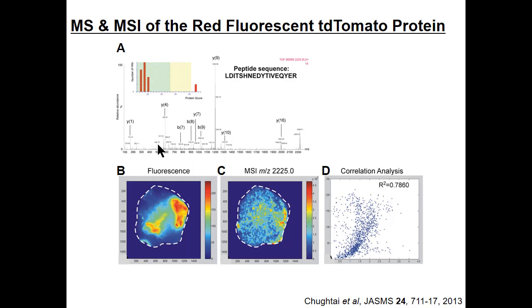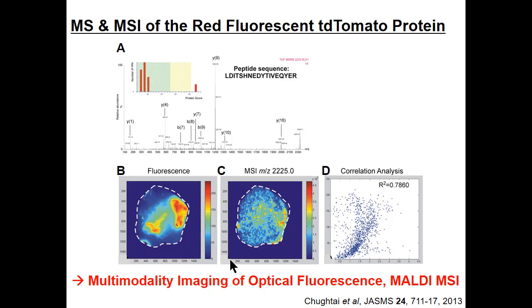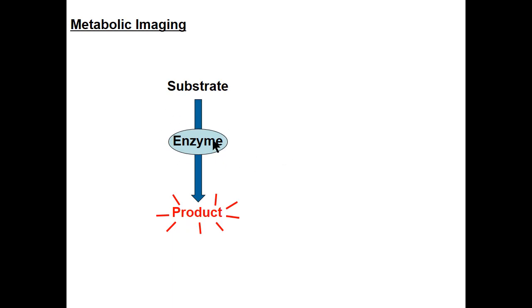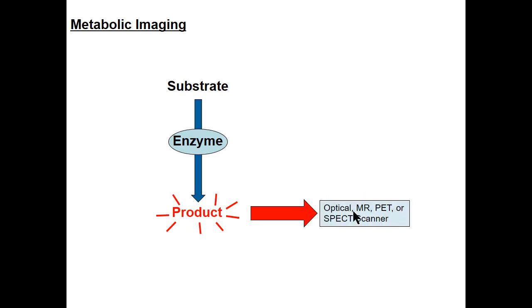We also developed detection of this TD tomato fluorescent protein with MALDI mass spectrometry imaging, where we detect tryptic peptides. The fluorescence nicely overlaps with a tryptic peptide derived from TD tomato — this is an example of ex vivo multimodality imaging combining optical fluorescence and MALDI mass spectrometry imaging. For metabolic imaging, we typically have a substrate which is modified or hydrolyzed by an enzyme to give a product detectable by one of our modalities.